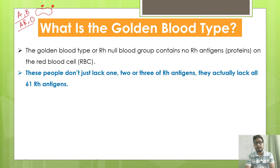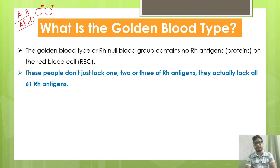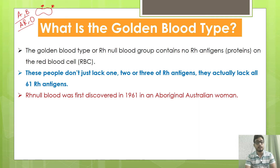These individuals are not just lacking one, two, or three Rh antigens — they are entirely lacking all 61 Rh antigens found in the human race. In the human race, the RBC surface contains various Rh antigens, and altogether these antigens number 61. But people having golden blood lack all 61 of them.